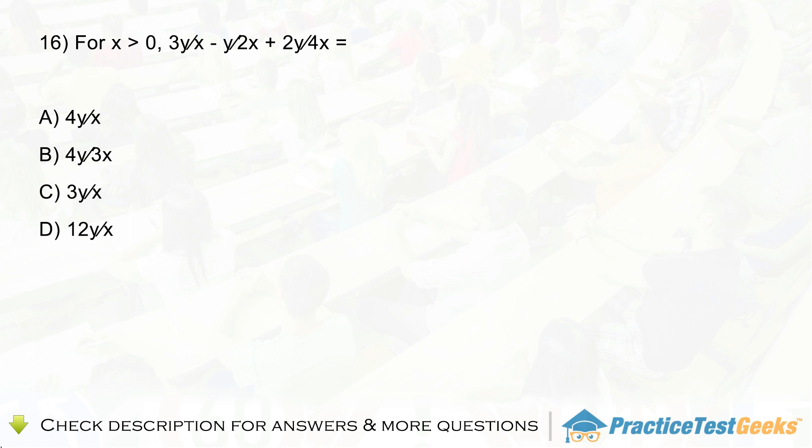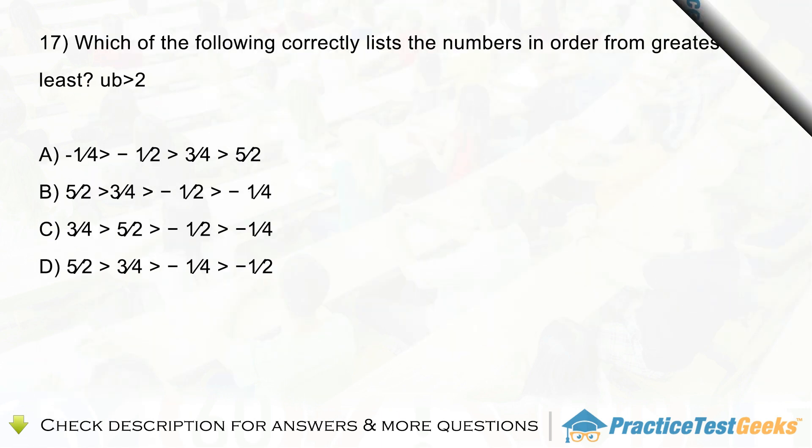Question 17. Which of the following correctly lists the numbers in order from greatest to least? Write the letter of the correct answer.